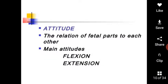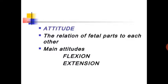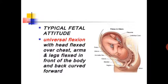Attitude is the relationship of fetal parts to each other. The main attitudes are flexion and extension. Typically, the fetal attitude is universal flexion — with the head flexed over the chest, arms and legs flexed in front of the body, and the back curved forward.